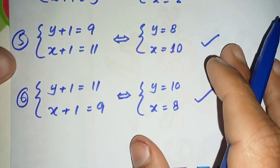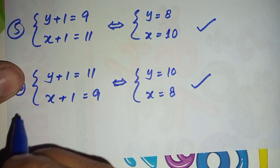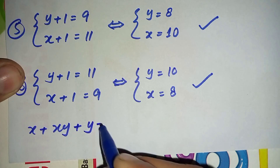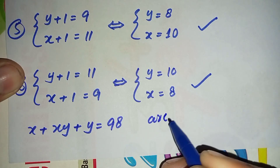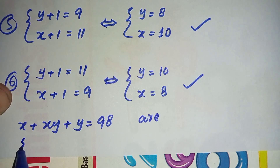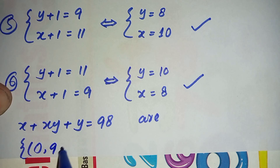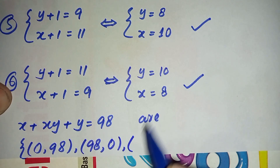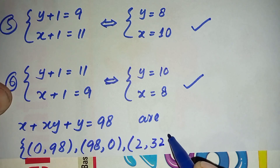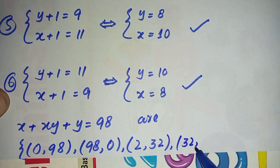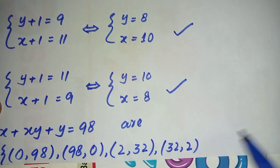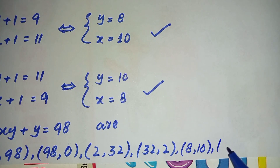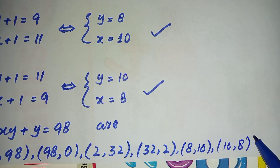Now we write all the possible pairs of solutions for x + x·y + y = 98: (98, 0), (0, 98), (32, 2), (2, 32), (10, 8), and (8, 10).